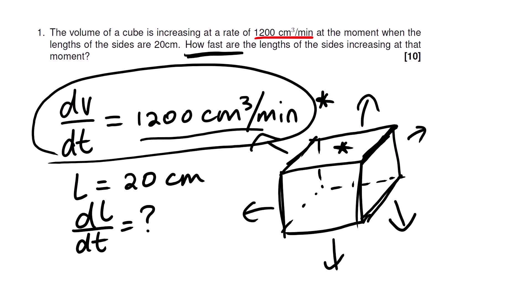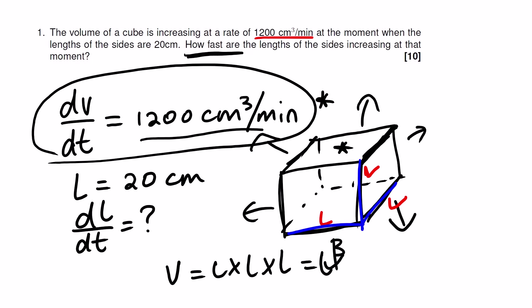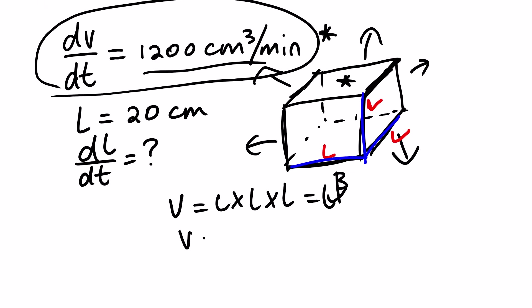We know that a cube is essentially a square in three dimensions, so it has length, length, and length. The volume is this side multiplied by this side multiplied by this one, which gives V equals L times L times L, that is L cubed. So the equation to calculate the volume of a cube is V equals L to the power of 3.